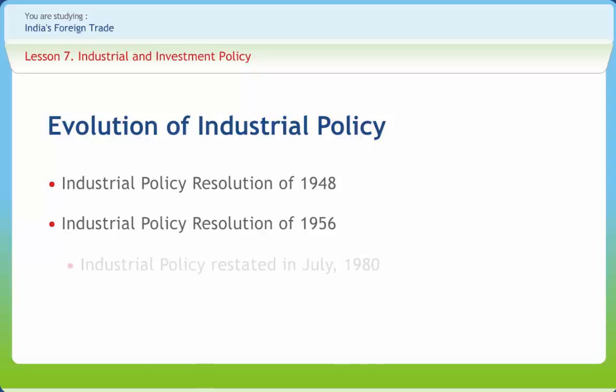The Industrial Policy was restated in July 1980. The announcement emphasized the commitment of the government to rapid and balanced industrialization of the country, with a view to benefiting the common man by increasing availability of goods at fair prices, larger employment, and higher per capita income. Maximization of productivity, growth, export, and generation of adequate employment were considered the need of the hour.